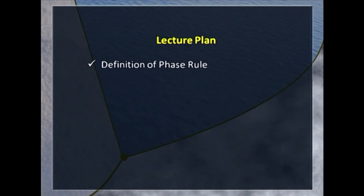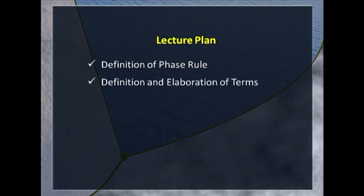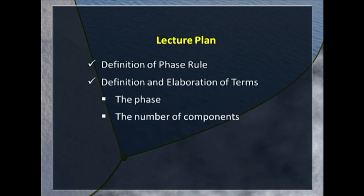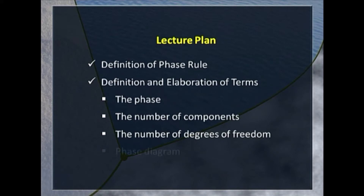Today's lecture is planned like this. We will first define the phase rule and then give the definition of the terms with some elaboration and examples — the phase, the number of components, and the number of degrees of freedom. And then finally we will talk about the phase diagram.